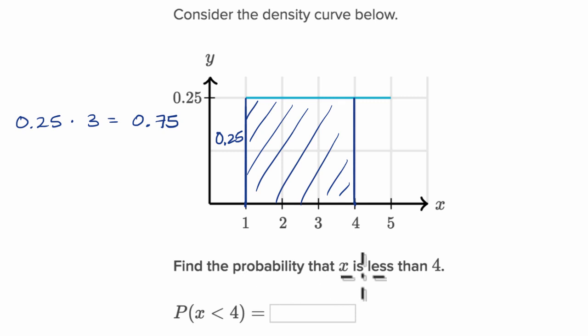So the probability that X is less than four is 0.75, or you could say it's a 75% probability. Let's do another one of these with a slightly more involved density curve.